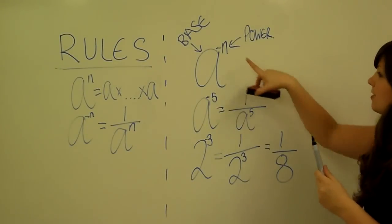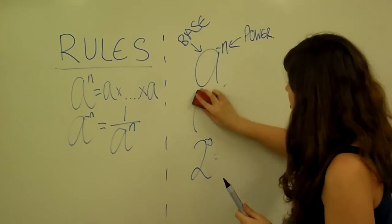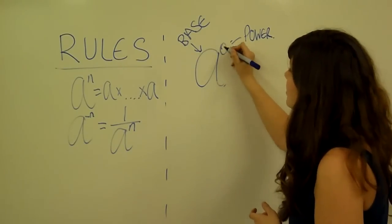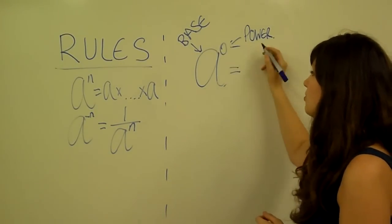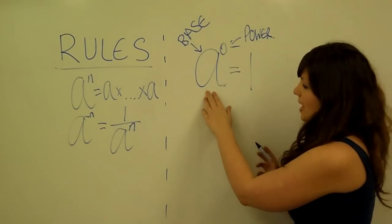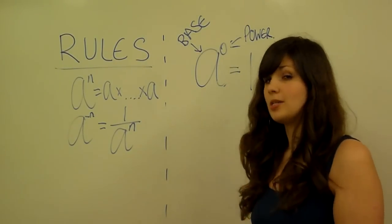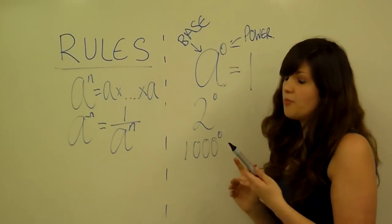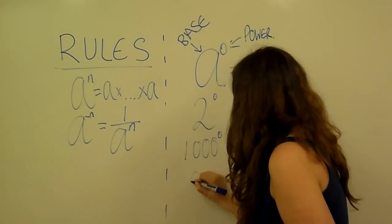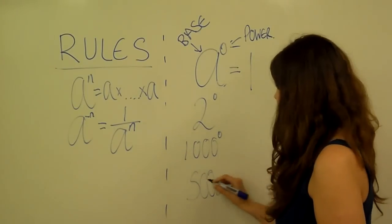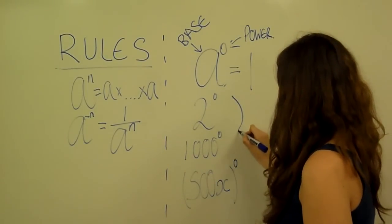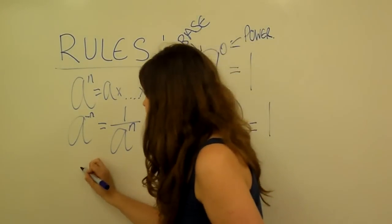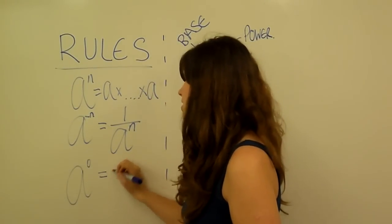So those are the rules for positive and negative powers. There's just one more case to cover, and that's when we have something to the power of 0. What we define this to be equal to is just 1. So no matter what you have as your base, if you put it to the power of 0 it will always equal 1. We could have 2 to the power of 0, or 1,000 to the power of 0, or even something like 500x to the power of 0 — and this is all still equal to 1. Our general rule is that A to the power of 0 is just equal to 1.